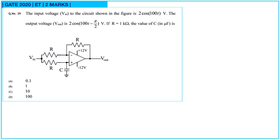Next question: the input voltage Vin to the circuit shown in the figure is 2cos(100t) volts. The output voltage Vout is 2cos(100t − π/2) volts. If R equals 1 kilo-ohm, find the value of C. This circuit is a differentiator circuit and we need to find C.